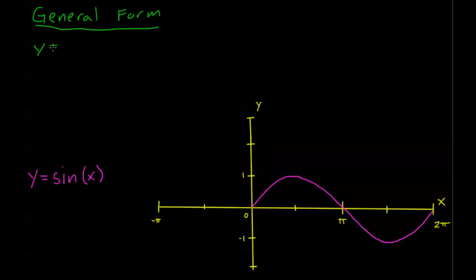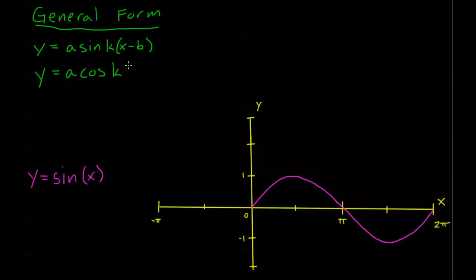So we have y equals a sine of k times (x minus b). In the last video I just had x here, but now I'm adding x minus b. This is the general form of the equation. For cosine, the same thing: y equals a cosine of k times (x minus b). Just to be clear, this k times (x minus b) is the entire argument of the cosine. This does not mean sine of k, times x, minus b — it means sine of k times (x minus b) altogether in the argument.